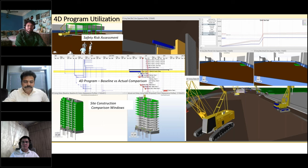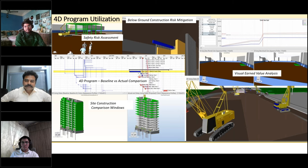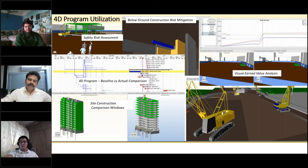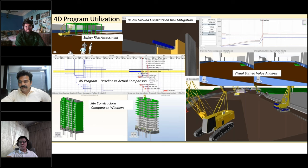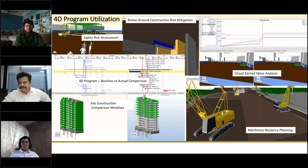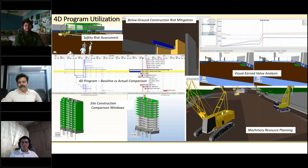We can do comparative analysis with multiple windows: baseline windows, actual windows, and projection windows. Coming to risk — risks occur in different ways, like unforeseen ground conditions or unforeseen space constraints. We can model and identify those risks and mitigate them in the early stages of program development, which is totally not available in 2D schedules in the current market. Further, we can do visual earned value analysis with a graph and comparative windows, and plan machinery resource movement on site — checking space availability and whether constraints have been mitigated.